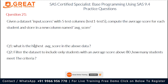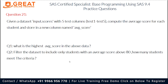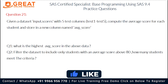The second question is to filter the dataset to include only students with an average score above 80, and find how many students meet that criteria — meaning students who have an average score above 80.